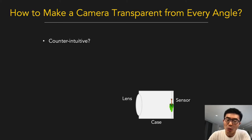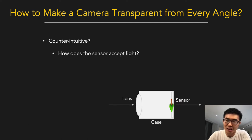Let's see why a transparent camera is difficult. If it is transparent, how does the sensor accept light, because the light will pass through the sensor? How do you stop stray light if the case is transparent?